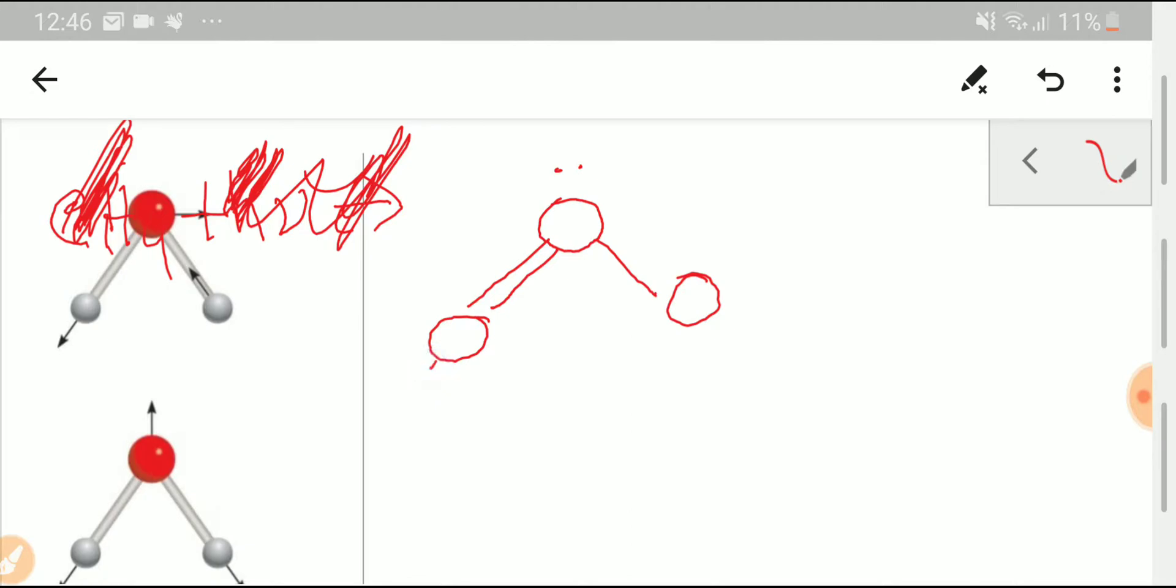Lone pair over oxygen will delocalize from this oxygen to this oxygen. So this is the structure of ozone. This is the hybrid resonance structure of ozone.